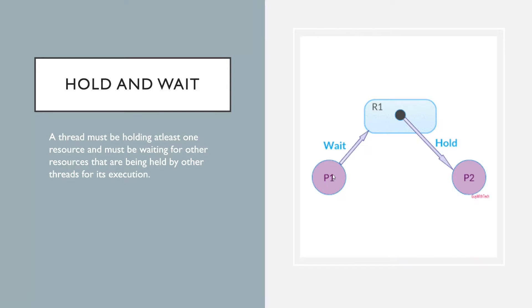The next condition is hold and wait. In a hold and wait situation, a thread must be holding at least one resource and must be waiting for other resources that are being held by other threads for its execution. Consider this example where P1 is waiting for R1 and P2 is holding R1, while P2 is also waiting for some other resource, say R2. That is what is called hold and wait.